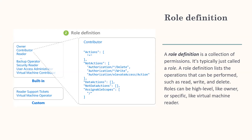Let's talk about the built-in roles. Owner has full access to all resources, including the right to delegate access to others. Contributor can create and manage all types of Azure resources but cannot grant access to others. Reader can view existing Azure resources but cannot make any changes. User Access Administrator lets you manage user access to Azure resources.